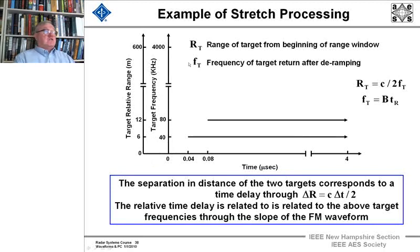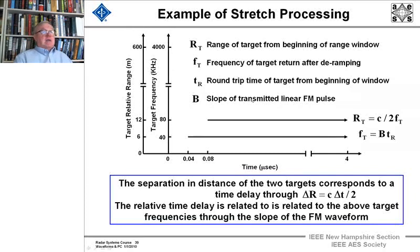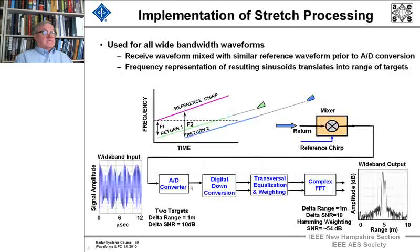This frequency is the frequency of the target return after de-ramping, and this range is the range of the target from the beginning of the range window where the de-ramping started — and that's the slope of the transmitted pulse. The round-trip time from the target to the beginning of the zero is T-R, and over a limited range window, we can separate these.